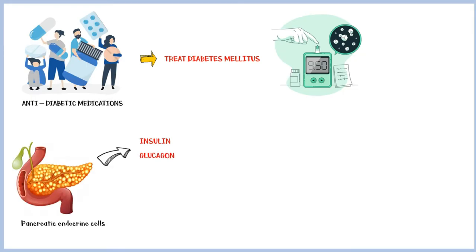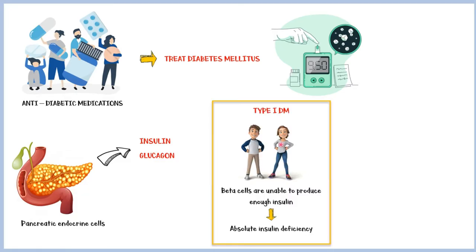As a quick review, type 1 diabetes commonly starts during adolescence. Here, the pancreatic beta cells are unable to produce enough insulin. Therefore, these individuals suffer from absolute insulin deficiency, and they are treated with lifelong insulin injections.